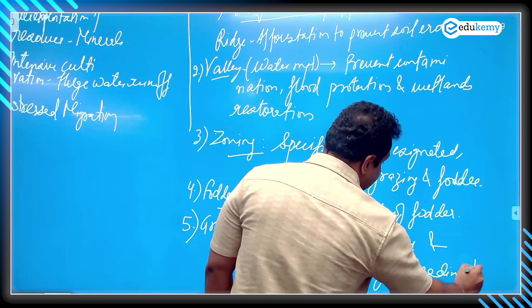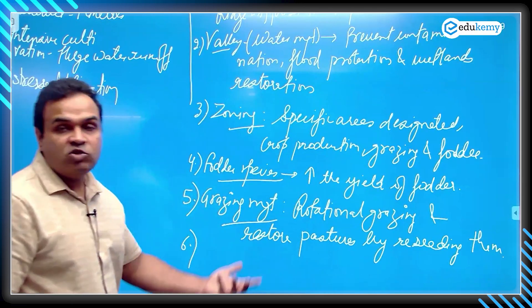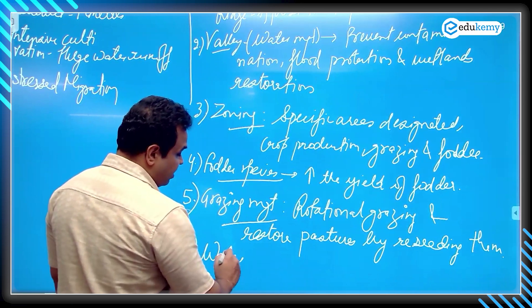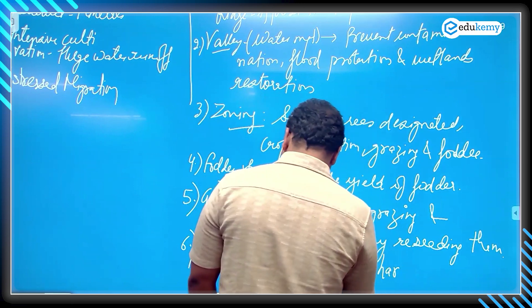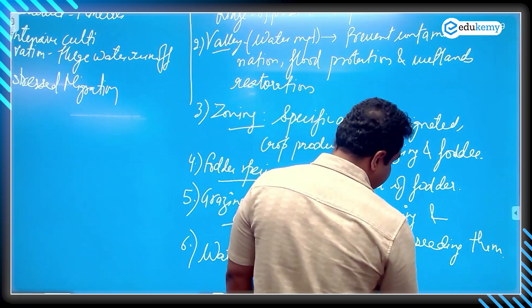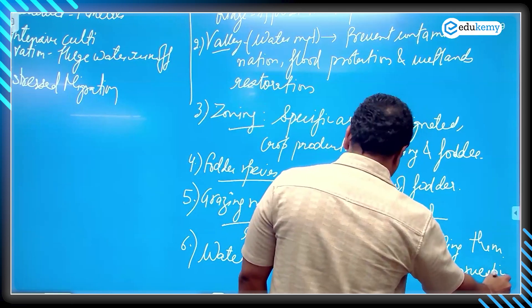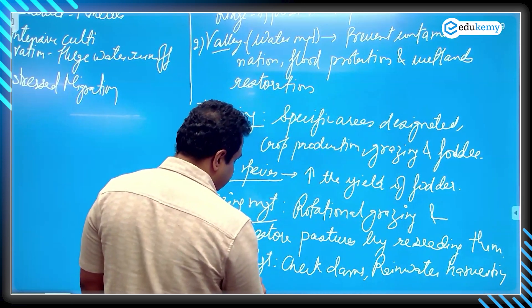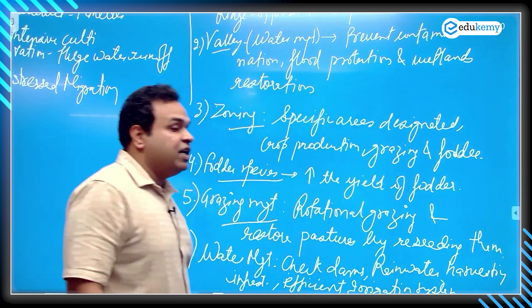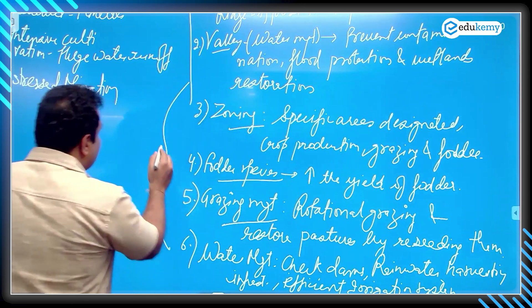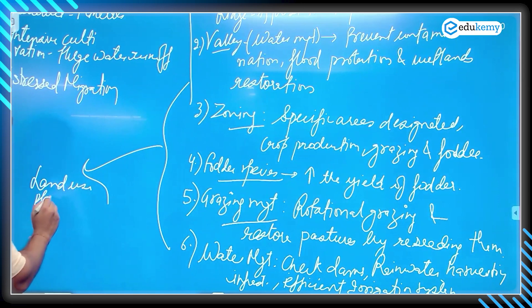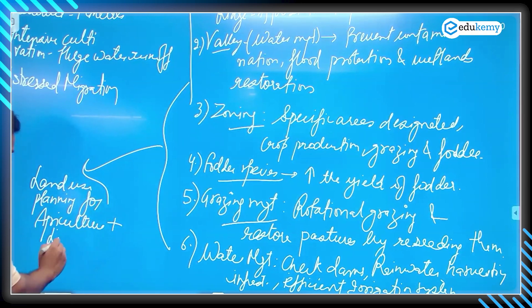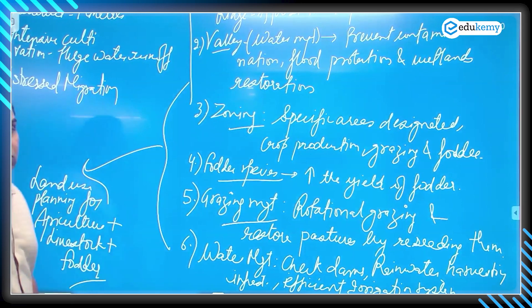Water management was done through construction of check dams and rainwater harvesting infrastructure, along with an efficient irrigation system. All of this can be summarized in one line as land use planning for agriculture, livestock, and fodder.